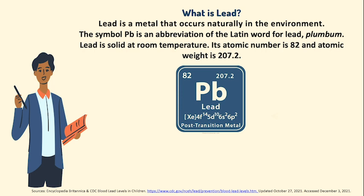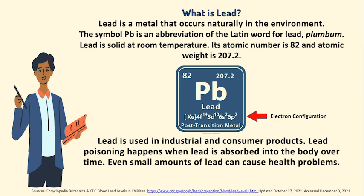What is lead? Lead is a metal that occurs naturally in the environment. The symbol PB is an abbreviation of the Latin word for lead, plumbum. Lead is solid at room temperature. Its atomic number is 82 and atomic weight is 207.2. Lead is used in industrial and consumer products. Lead poisoning happens when lead is absorbed into the body over time. Even small amounts of lead can cause health problems.